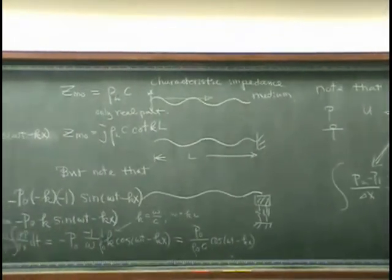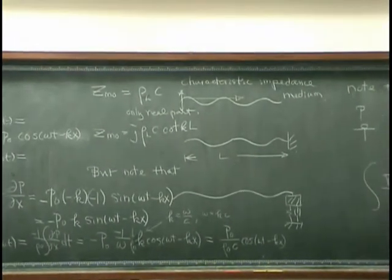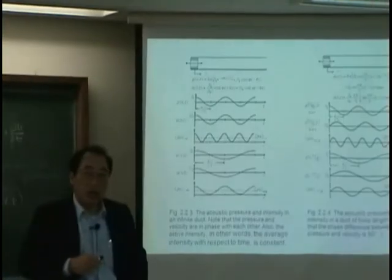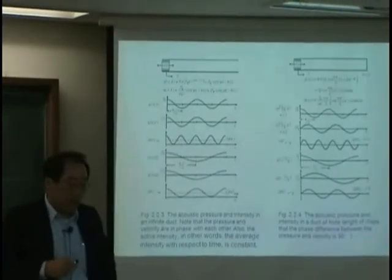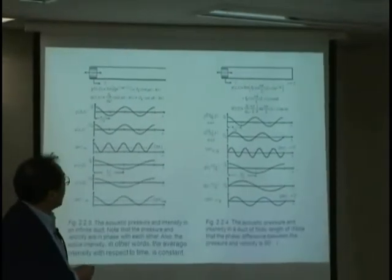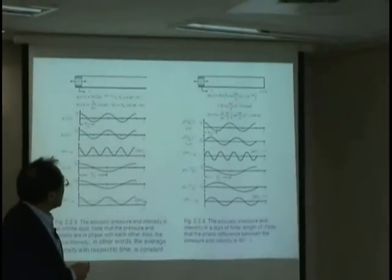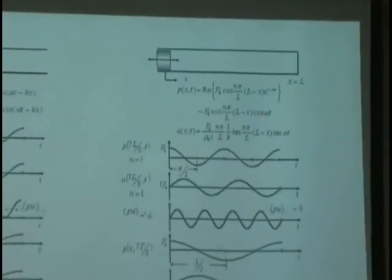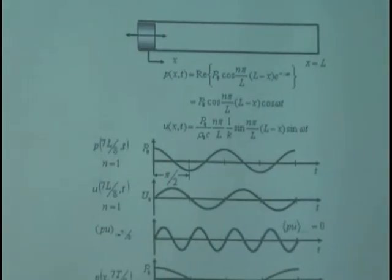What about the pressure and intensity for finite duct at x equal l? The pressure would be P0 cosine n pi over l, l minus x, cosine omega t. Why?